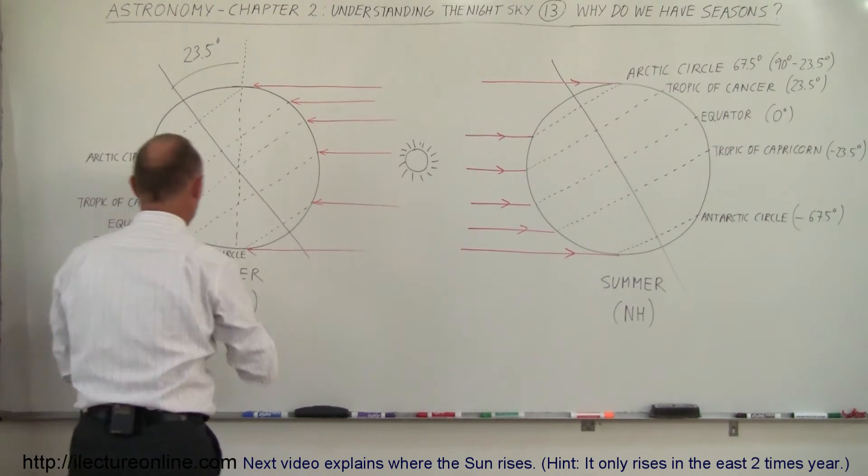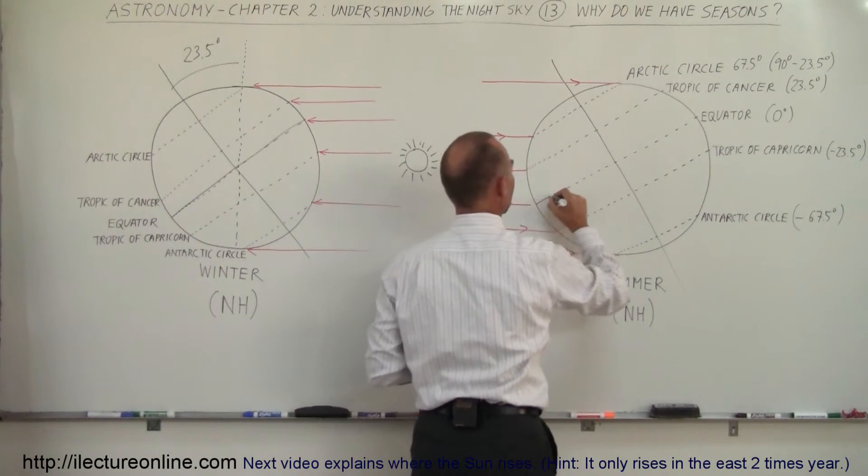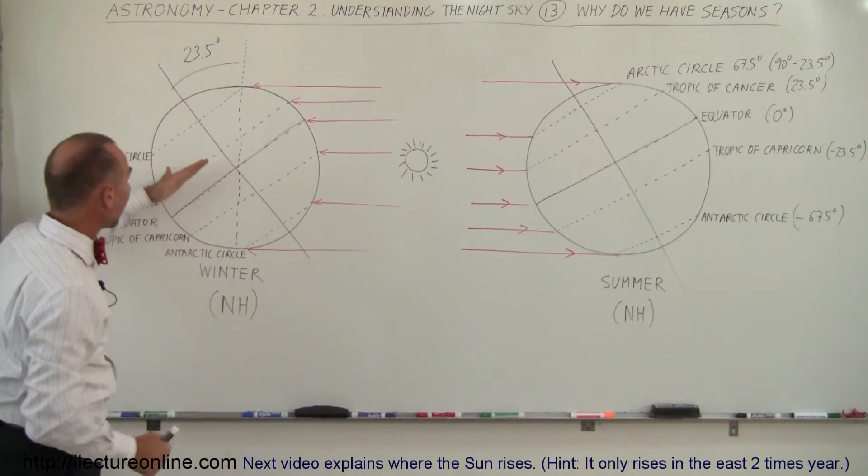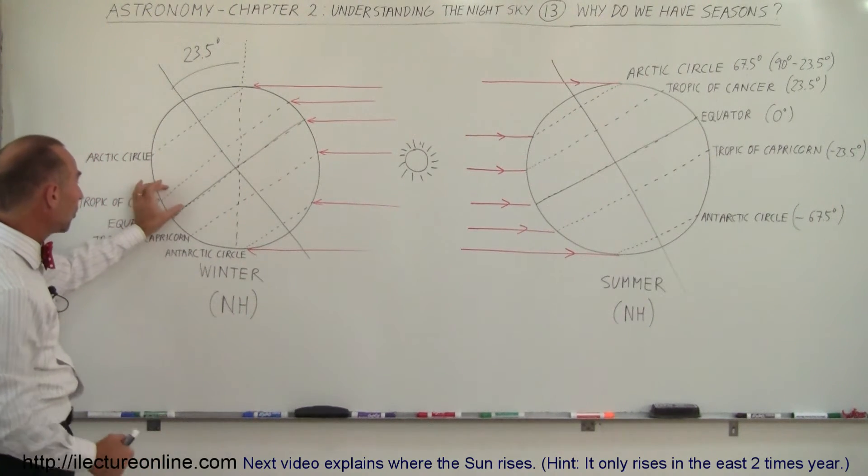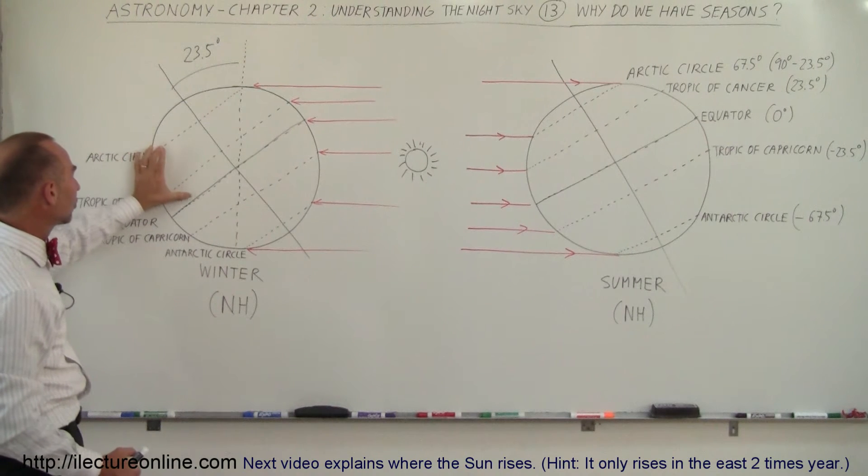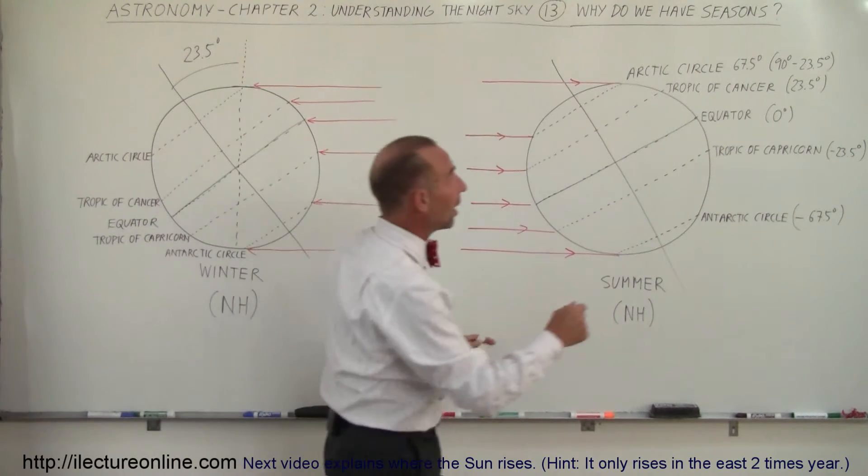Here's the equator. Let me draw a solid line to indicate the equator. All right, so the line directly above the equator here is called the Tropic of Cancer that is 23.5 degrees above the equator. Then we have the Arctic Circle which is 67.5 degrees above the equator and here I try to illustrate why.